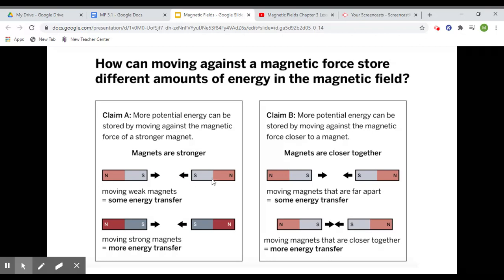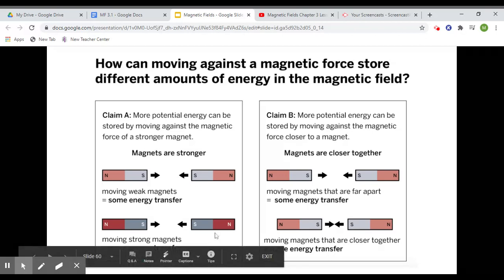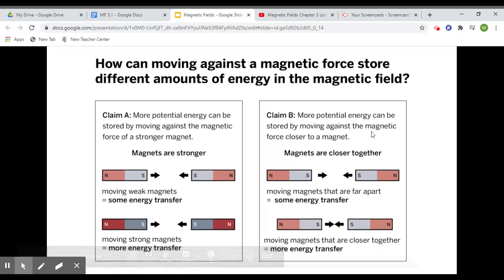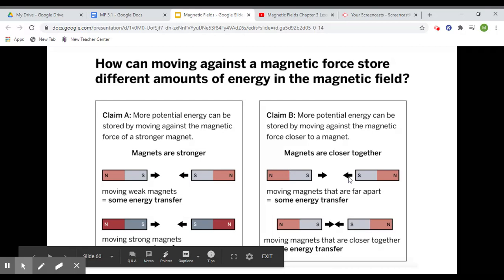You can see here we have the same distance apart, weak versus strong. And then we have Claim B: more potential energy can be stored by moving against the magnetic force closer to the magnet. You can see here we have the same strength magnets but at different distances apart. We're going to be investigating these today.